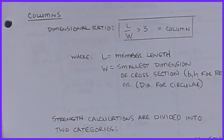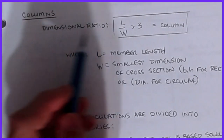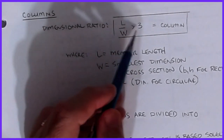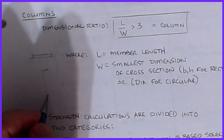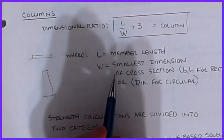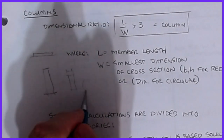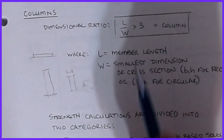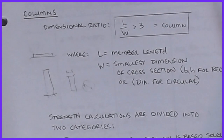How do you define a column dimensionally? A column is classified when the ratio of length to smallest width dimension is greater than three. So L is the member length and W is the smallest dimension — for a rectangular shape that's the short side; for a round shape it's the diameter. That L/W ratio must exceed three to be classified as a column.